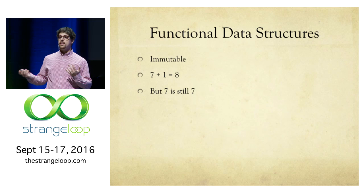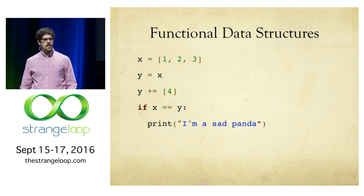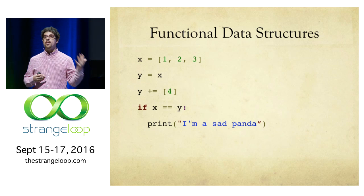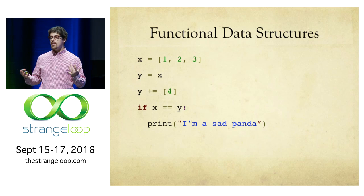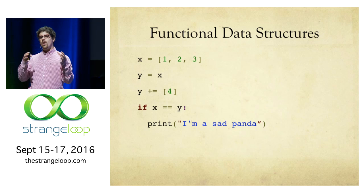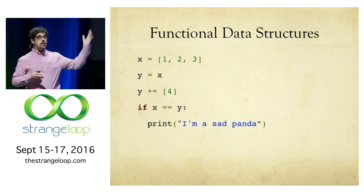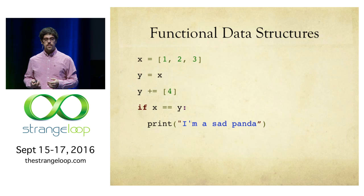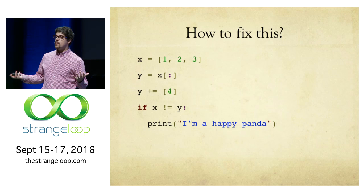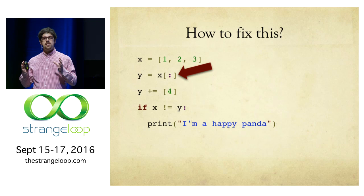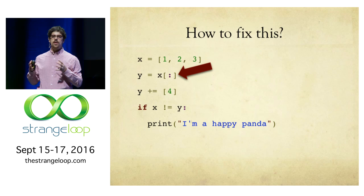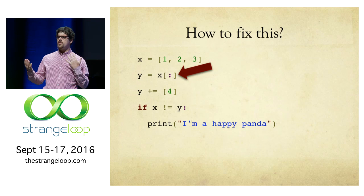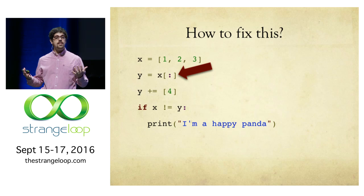Let's look at some examples in Python to build some intuition about what a functional data structure actually is. Here we have a Python program where we define this list X, and X has three elements. Then we say that Y is equal to X, and we add a new element to Y. Now this program prints that I'm a sad panda. Why is that? Because when we added the element to Y, we also kind of added it to X by mistake. It doesn't look like we added it to X — it looks like we added it to Y — but this is how it goes without functional data structures. How do we fix this? I made a little change to the program: this little sigil actually copies the list X. So now we're not saying Y is equal to X, we're saying Y is a copy of X. Now when we compare the two lists, we see they are different, and we can be a happy panda.